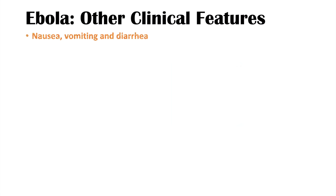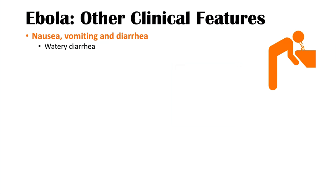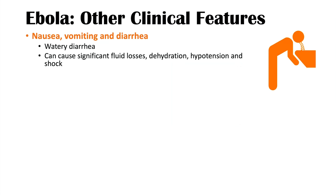Other clinical features include nausea, vomiting, and often watery diarrhea, which can cause significant fluid losses and dehydration. This leads to hypotension — low blood pressure — as the individual loses so much volume that their blood pressure decreases, potentially progressing to shock.